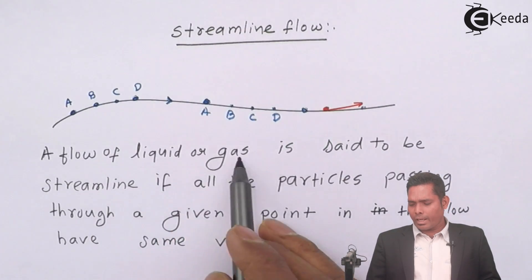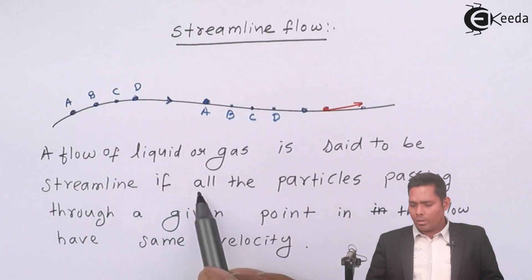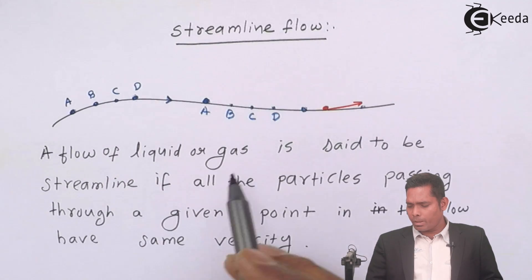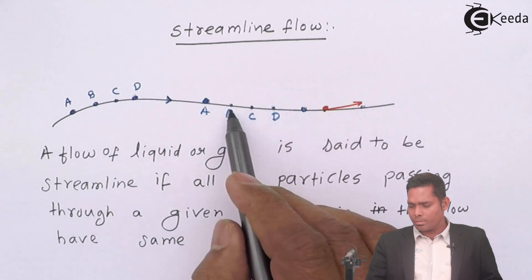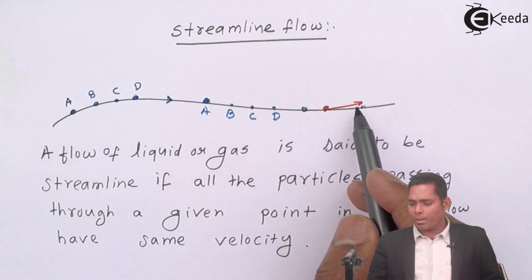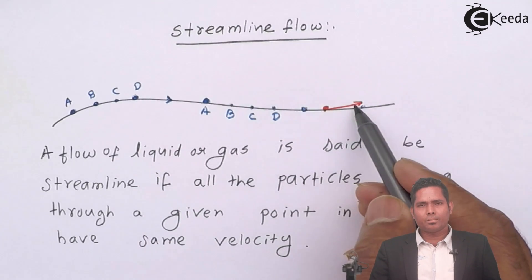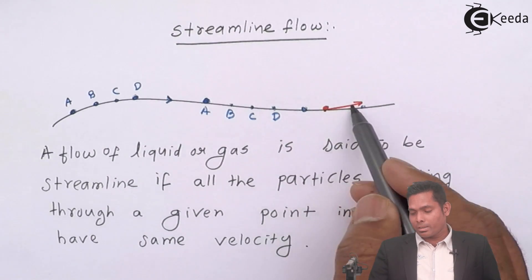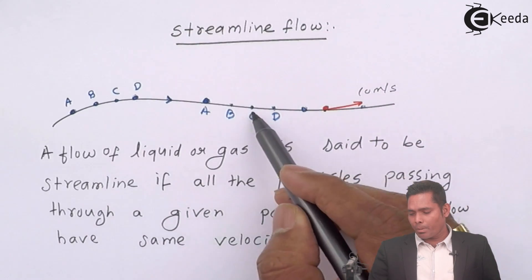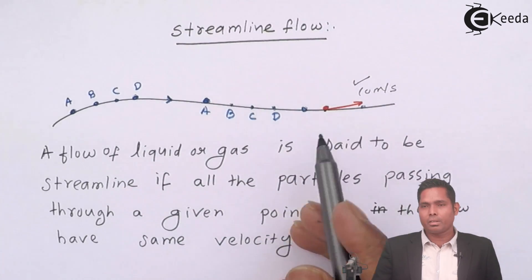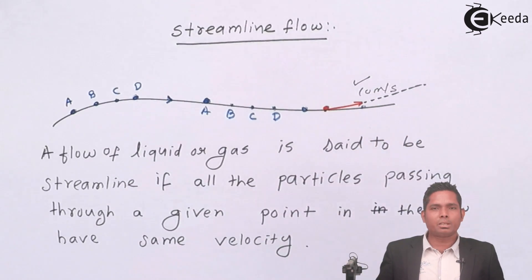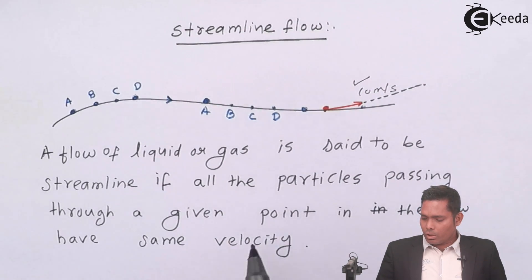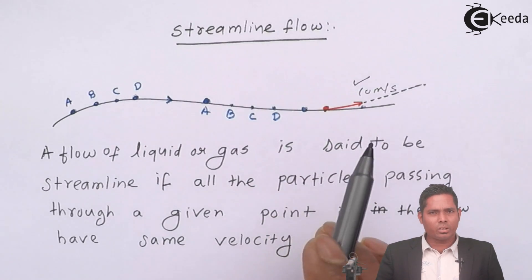The flow of a liquid or gas is said to be streamlined if all the particles passing through a given point have the same velocity — the same speed and the same direction. If D passes through a point with 10 meters per second, then C passing through that same point should also be 10 meters per second in the same direction. So the definition of streamlined flow: all particles passing through a given point must have the same velocity.